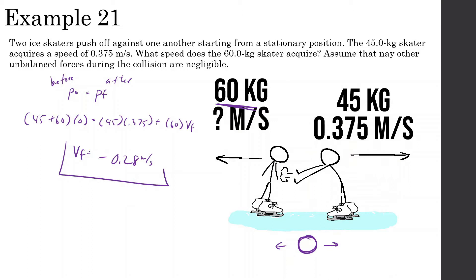Another thing I want to show here is that kinetic energy actually increases after the explosion. Before the explosion — the push-off — there's zero kinetic energy, but then afterwards there was an increase of kinetic energy; they both started moving. Many times this is given by a chemical reaction, but in this situation it's just given by the muscles they provided.